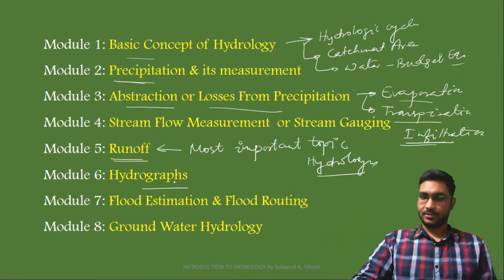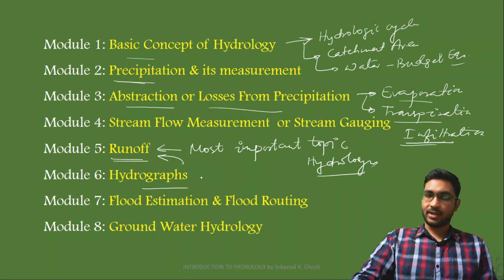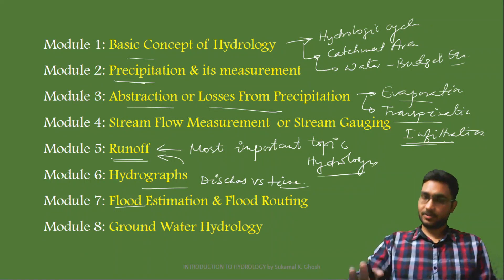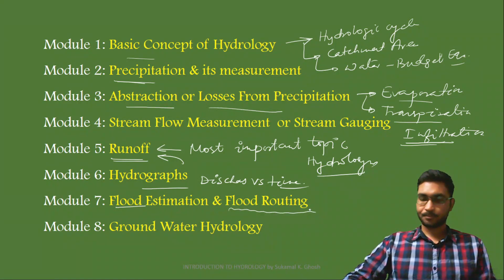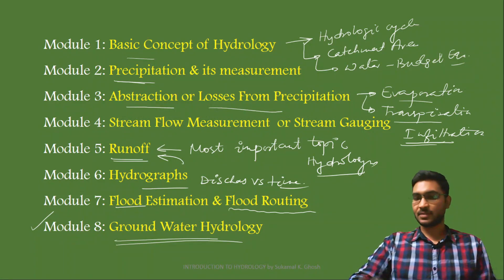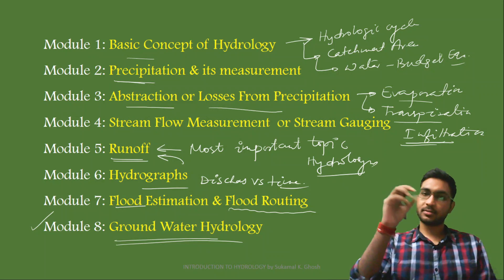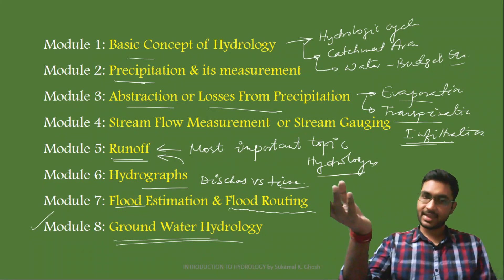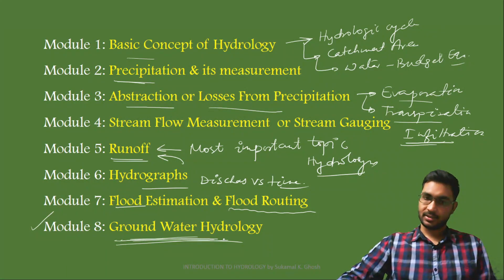The sixth module is Hydrographs, which are related to runoff and are basically a plot of discharge versus time. The seventh module is Flood Estimation and Flood Routing — we will discuss estimation of floods, how to control them, and flood routing, which is also very important. The eighth and last module is Groundwater Hydrology, which is very important from a civil engineering point of view — not only in this hydrology subject, but also in soil mechanics and environmental engineering.